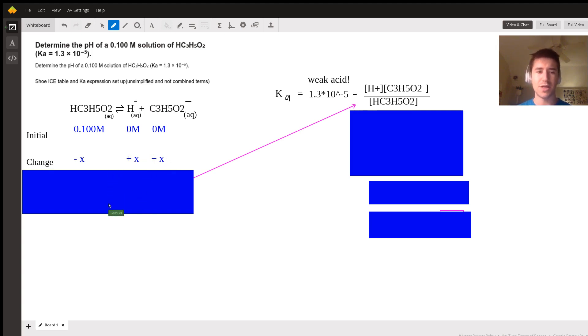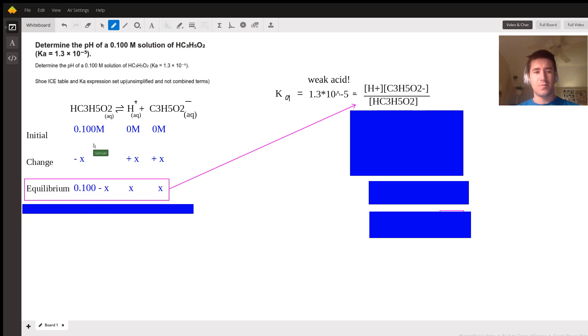And finally, we can combine them into our equilibrium concentrations. 0.1 molarity minus X plus X and plus X. And I left off the molarity because I'm sure we'll remember that throughout. We're going to take this and plug these values into our Ka and it'll look something like this. X times X and then 0.1 minus X.